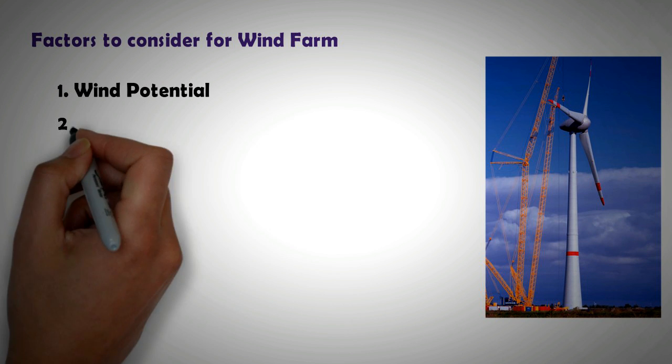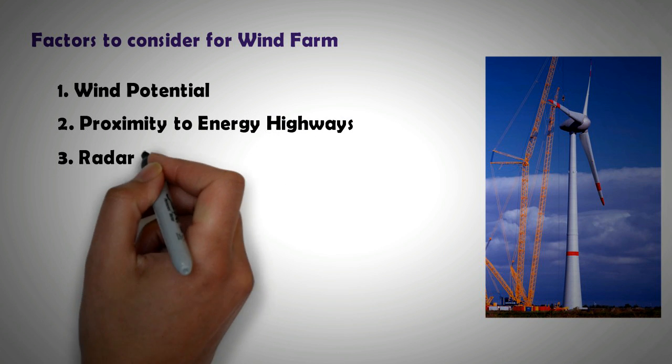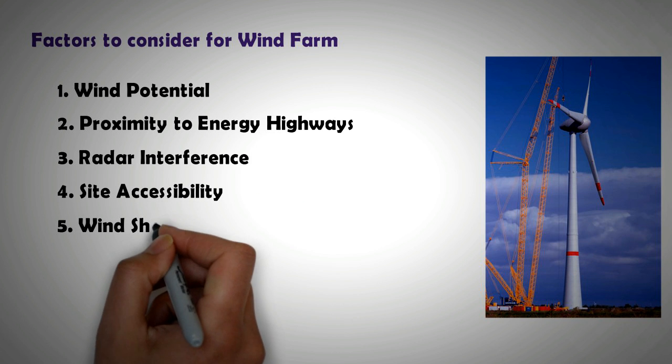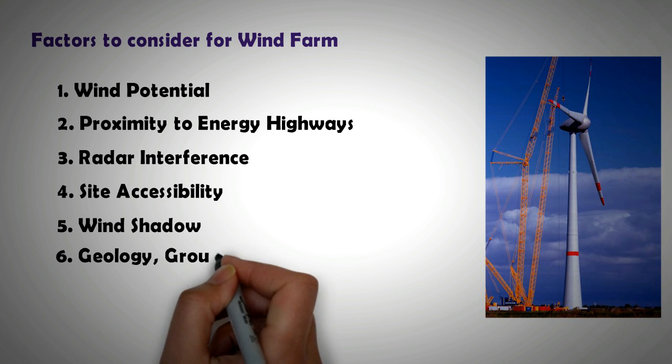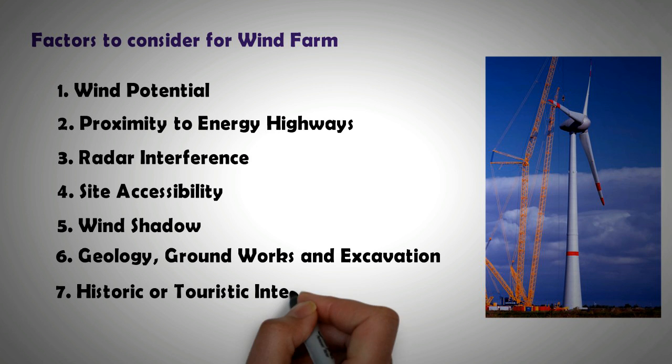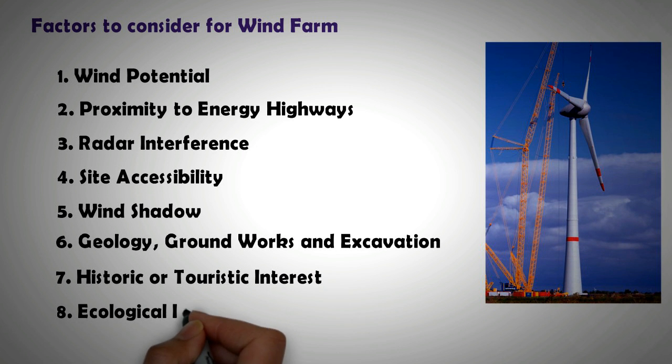Number one is wind potential. The second thing is proximity to energy highway. The third factor is radar interference. Fourth is site accessibility. Fifth is wind shadow. Sixth is geology, groundworks and excavation required. Seventh is historic or touristic interest on the site. And lastly the ecological interest in the site. Let's look at each of these factors individually.